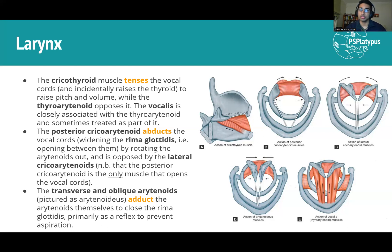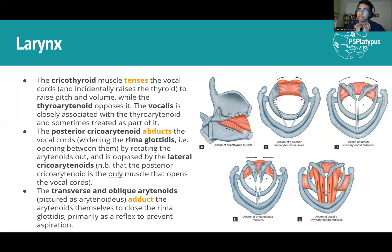The transverse arytenoids also serve a function in voice production: many sounds require a little pressure to build up first. If you just start speaking from nothing your voice will be very hoarse and quiet, but if you pause a moment, pressure builds and then you have a working voice. Most importantly, the posterior cricoarytenoid is the only muscle that actually brings the vocal cords apart — hold onto that.